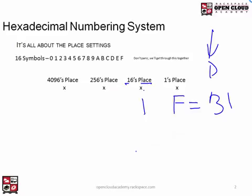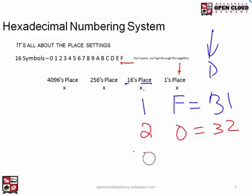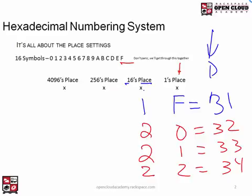When we go one past 1F, the ones digit resets to 0 and the 16s digit becomes 2 — because F is the last symbol and we jump to the next place setting. So 20 hex is 2 times 16, which is 32. Then 21 hex is 33 — 32 plus 1 — and 22 hex is 34 — 32 plus 2.